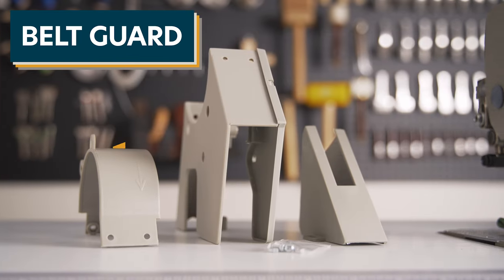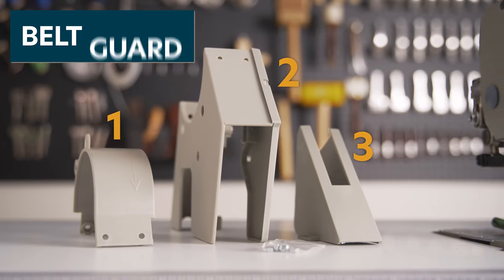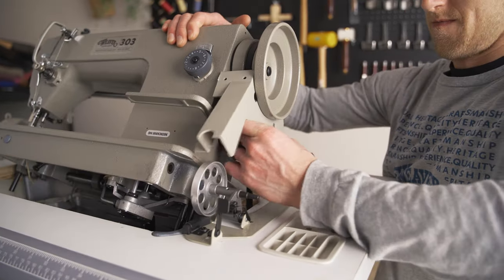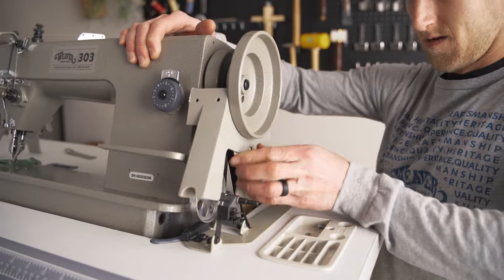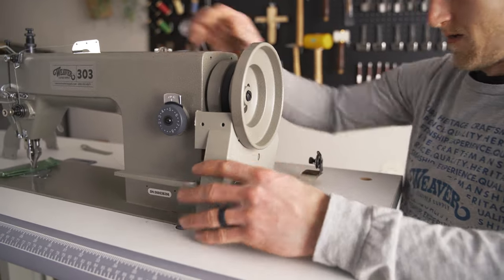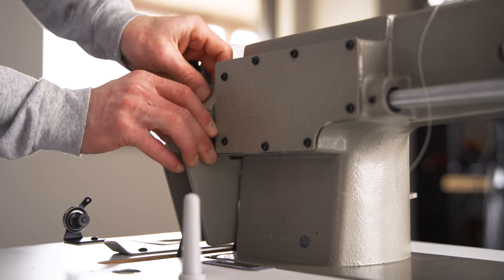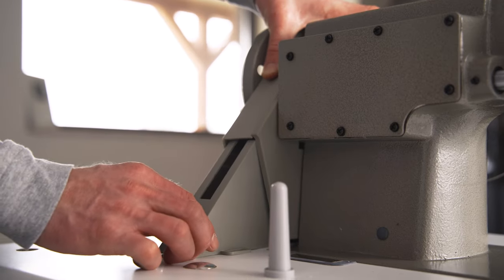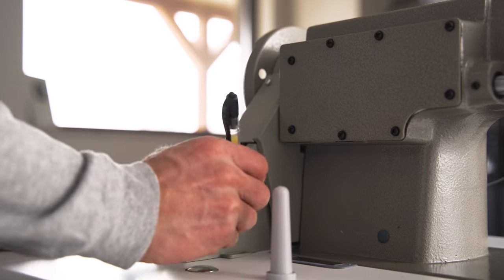The belt guard consists of three primary pieces. First, insert the front half of piece 2 in front of the flywheel. Then insert the back half of piece 2 behind the flywheel. Next, slide piece 3 under the back half of piece 2 and fix it into place with a screw.